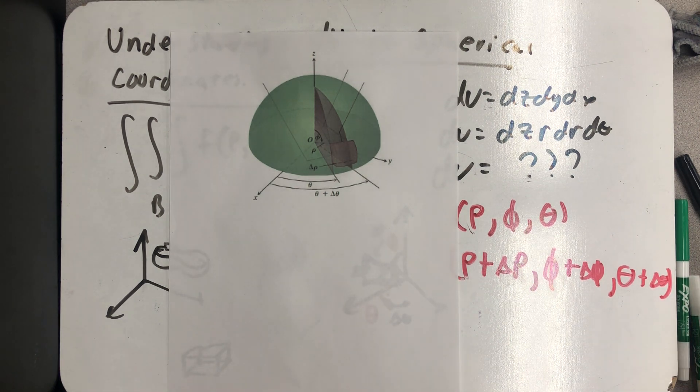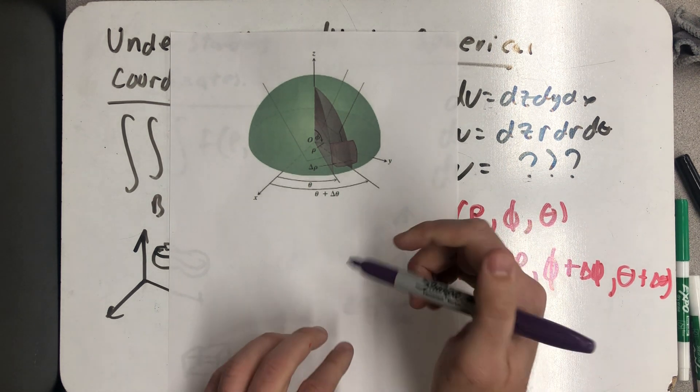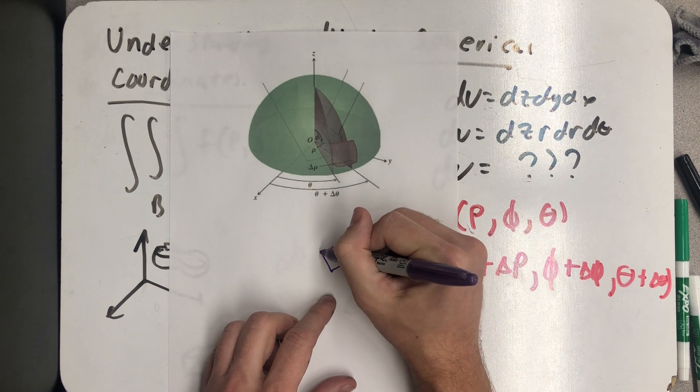Well, now our job is to try to figure out the volume of that wedge, or to describe the volume of that wedge. Like we did back in polar coordinates, what I'm going to do is I'm going to actually pretend that that little wedge is a rectangular prism.